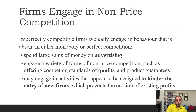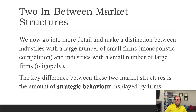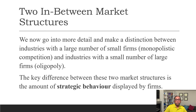Now we make a distinction between the two in-between market structures. In monopolistic competition, firms have some monopoly power because their products are differentiated — they equate marginal revenue to marginal cost and determine the price based on a downward-sloping demand curve, just like a monopoly. The second imperfect market is oligopoly, characterized by a small number of large firms. The key difference between these two structures is the strategic behavior displayed in oligopoly. We will discuss the oligopoly market in detail in the next part.